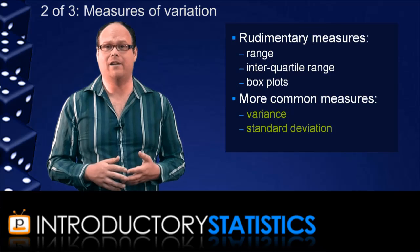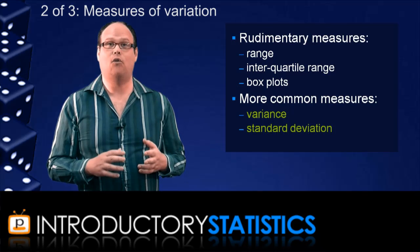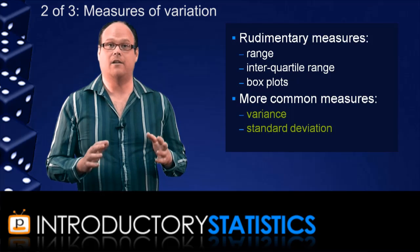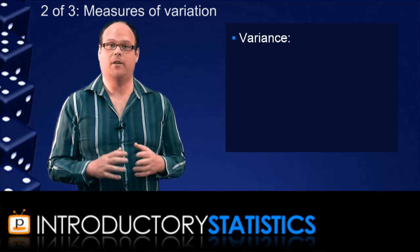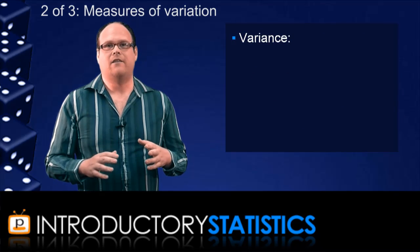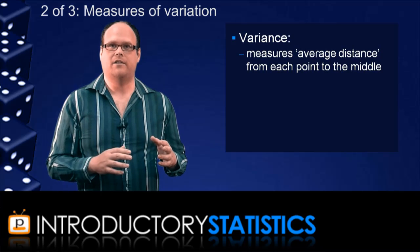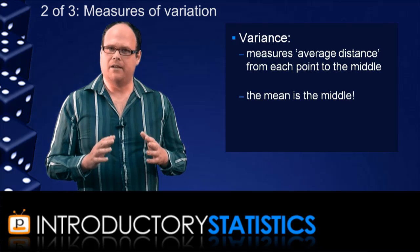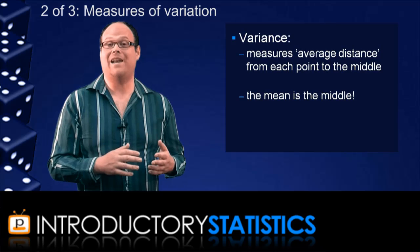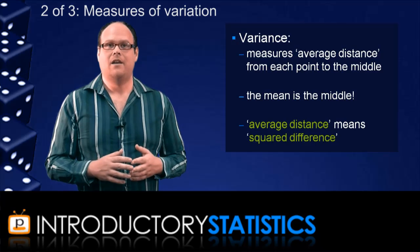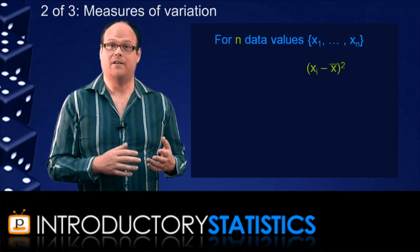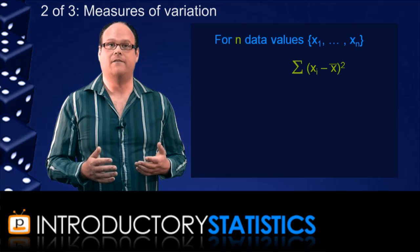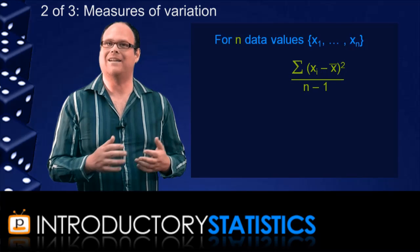The most common measures of variation are the variance and standard deviation. These measures are more complicated. Like the mean, they're formulas that take into account all the values in a data set. The standard deviation is actually just the square root of the variance, so for now we'll focus on the formula for the variance and where that formula comes from. The idea is that the variance measures the average distance from each point to the middle of the data set, and here we use the mean as our measure of the middle. However, it turns out that the best way to measure this average distance is to actually square the difference between each data value and the mean. So the variance is calculated by squaring the difference between each value and the mean, adding these square differences up, and then dividing the sum by n minus one.